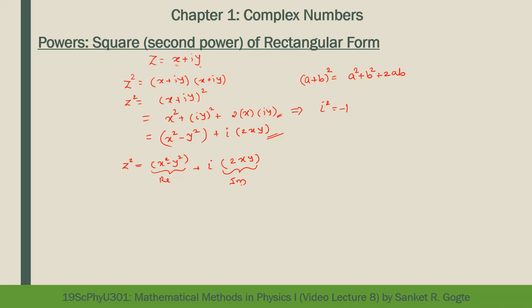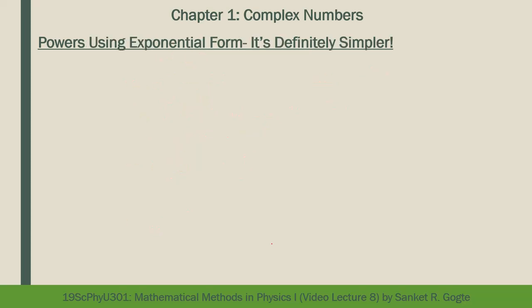Now suppose we want to find z^n for higher integer n. When we expand the bracket (x + iy)^n, we get 2^n terms. As n increases, the number of terms explodes, making it very difficult to find powers of complex numbers using the rectangular form.